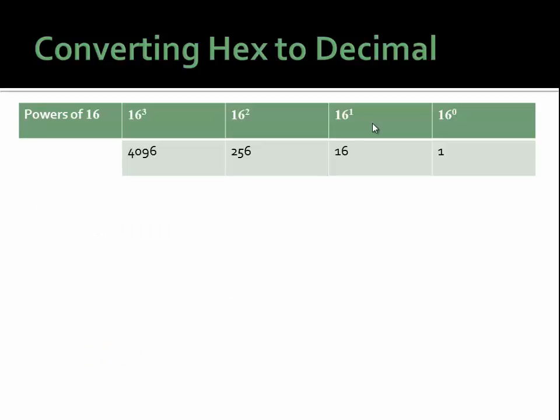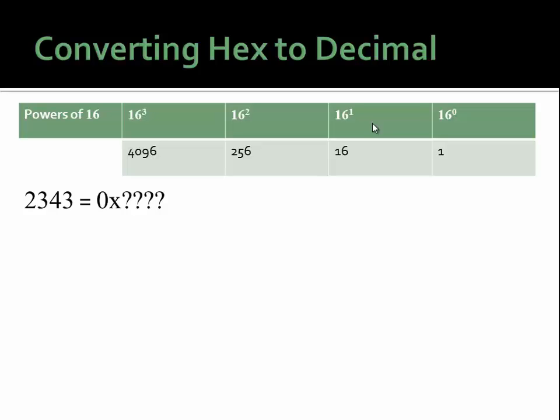Now try this last one on your own: convert decimal 2343 to hex.